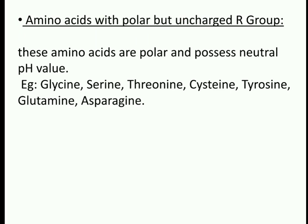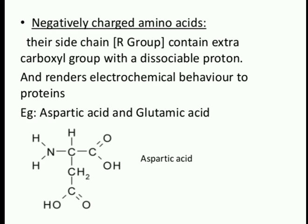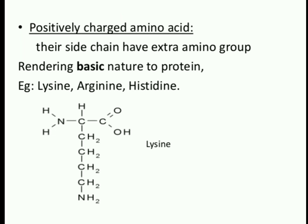Amino acids with polar but uncharged R groups are polar and possess neutral pH value — examples include glycine, serine, and threonine. Negatively charged amino acids have an extra carboxyl group with a dissociable proton, rendering electrochemical behavior to proteins — example: aspartic acid. Positively charged amino acids have an extra amino group in their side chain, rendering basic nature to the protein — examples are lysine, arginine, and histidine.